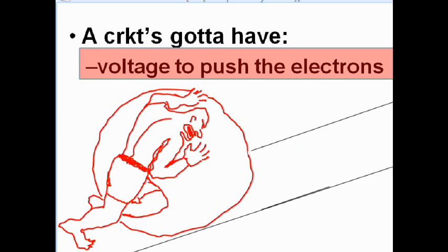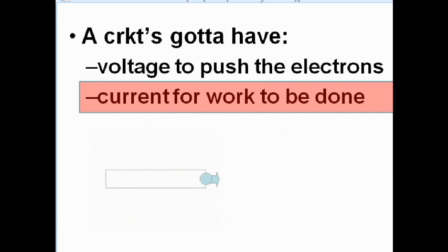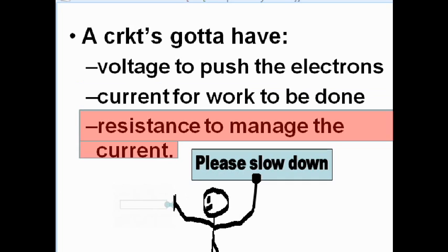A circuit's got to have voltage to push the electrons, current for work to be done, and resistance to manage the current.